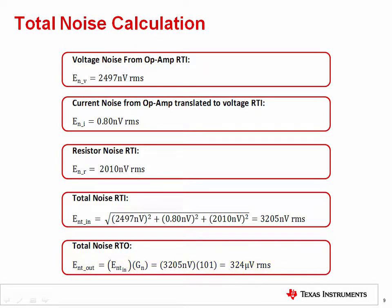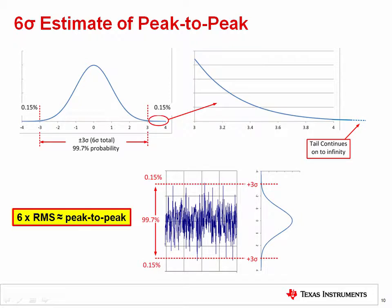Now frequently, engineers want to know the peak-to-peak noise. How do we compute this? We can do this by multiplying the RMS noise by 6, or 6.6.